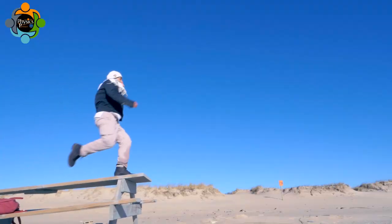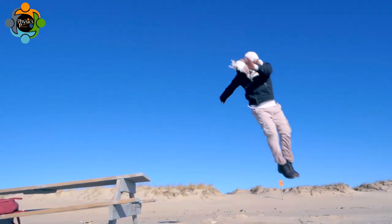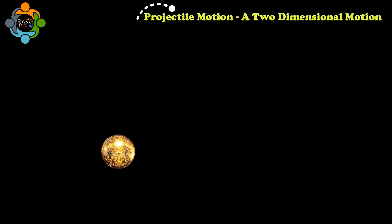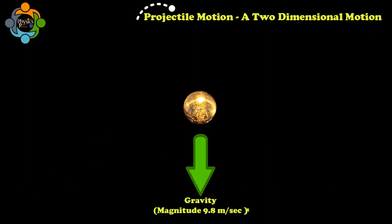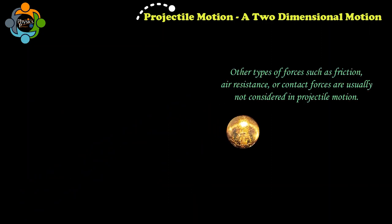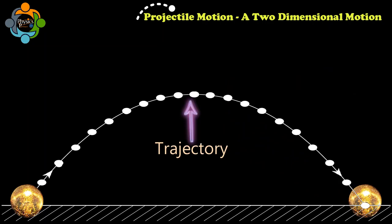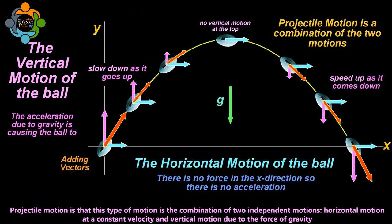Let's explore what projectile motion is and discuss real life examples. A projectile is any object thrown into space upon which the only acting force is gravity — or more precisely, the primary force acting on a projectile is gravity. This does not necessarily mean that other forces do not act on it, just that their effect is minimal compared to gravity.